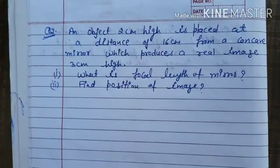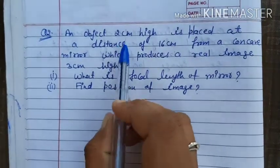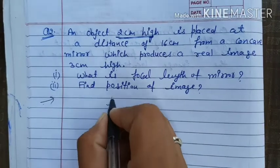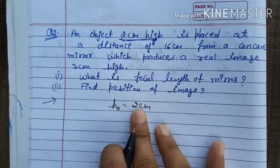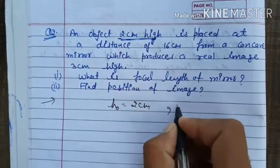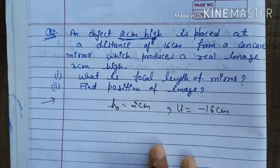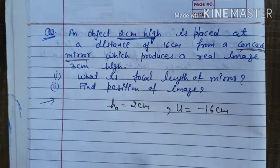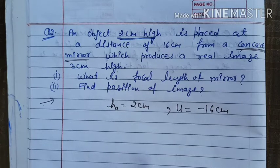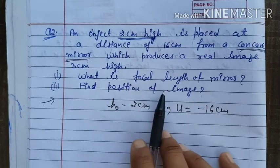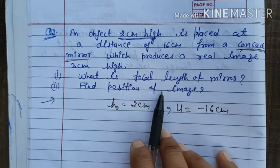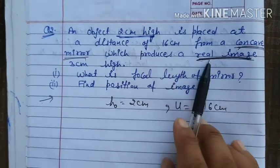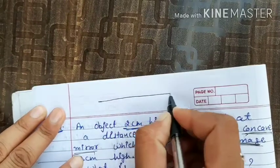Question number two: an object 2 cm high is placed at a distance of 16 cm from a concave mirror, and it produces a real image 3 cm high. We need to find the focal length and position of the image. Height of object ho = 2 cm, u = −16 cm, and height of image hi = −3 cm (real image, so negative).